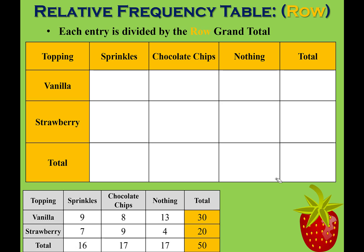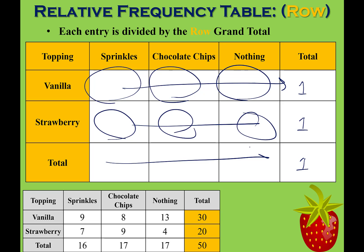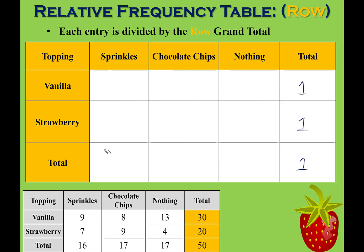Now we're going to base our 100% off of the rows — a relative frequency based on the rows. That means each row total will be 1. These three boxes will add together to be 100% vanilla, 100% strawberry, and then the totals on the bottom. When writing fractions, the numerator for vanilla with sprinkles is 9, but the denominator is 30, because that's how many people chose vanilla overall. So 9 divided by 30 gives me 0.3.